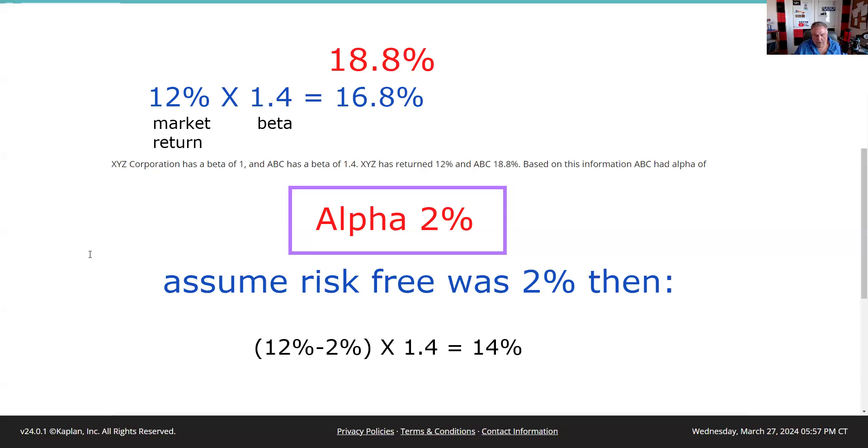So now the market return was 12%, but we kind of got 2% risk-free. So we really got 10% from the market, right? That's the idea of minusing that risk-free rate of return. There was our market return, risk-free. We times it by the beta, we have 14%.